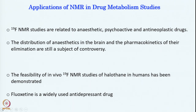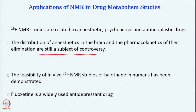F-19 studies were used in anesthetic, psychoactive, and anti-neoplastic drugs — drugs that contain an F-19 nucleus were used for detecting in vivo. The distribution of anesthetics in the brain can be studied, or even the pharmacokinetics of their elimination, and how it is being done is still a subject of controversy. The feasibility of in vivo F-19 NMR in humans has been demonstrated; one good example is the drug fluoxetine, which is widely used as an anti-depressant drug.